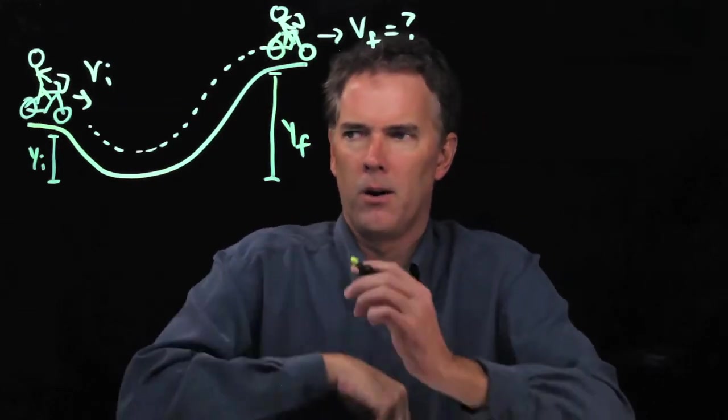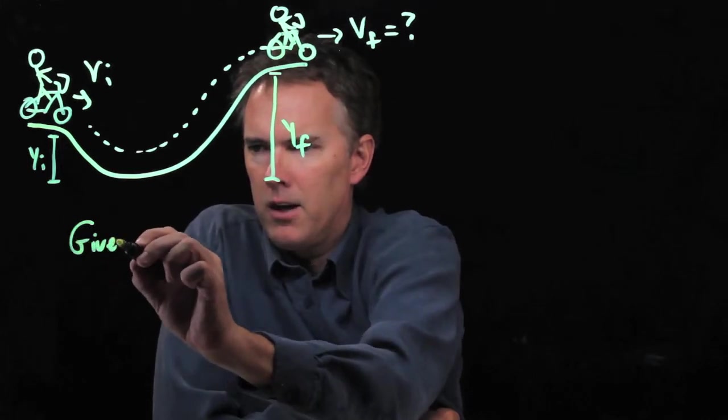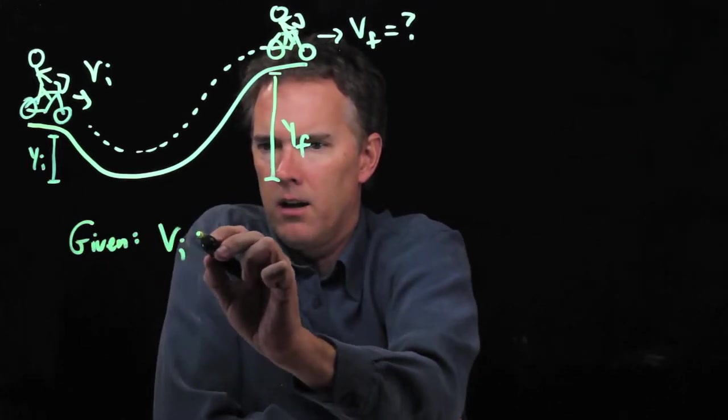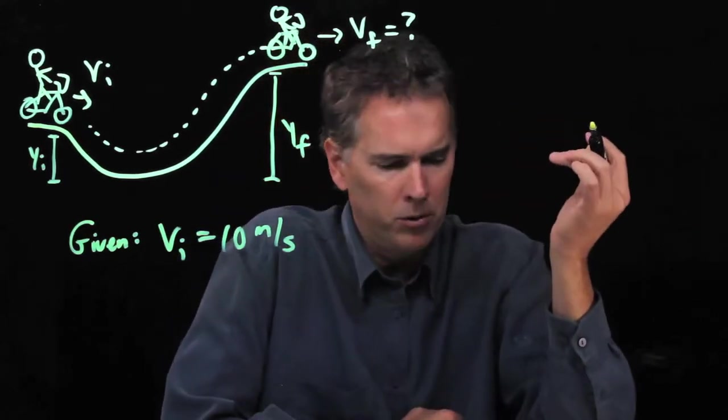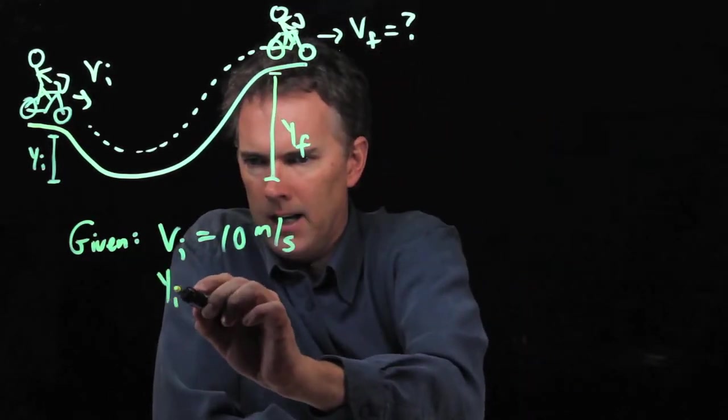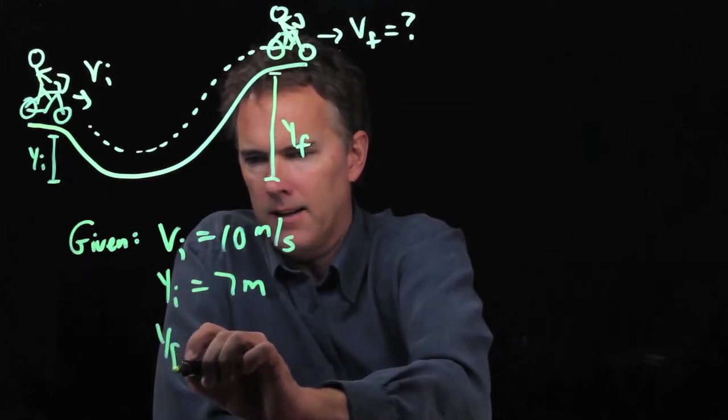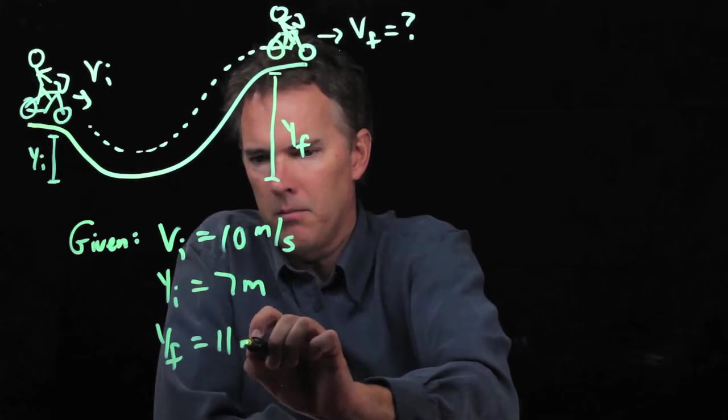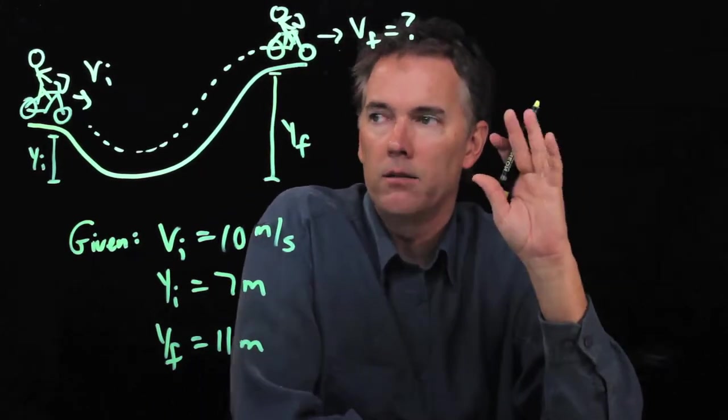Let's give you some givens first. Let's say that your initial speed Vi is 10 meters per second, reasonable speed for a bicycle. Let's say that your initial height is 7 meters and your final height is 11 meters. We're not going to give you the mass; hopefully we won't even need that.